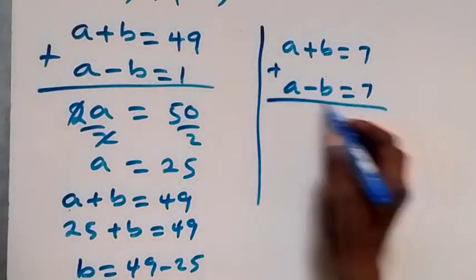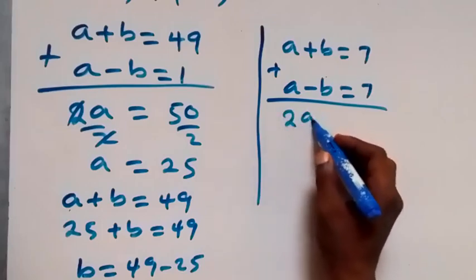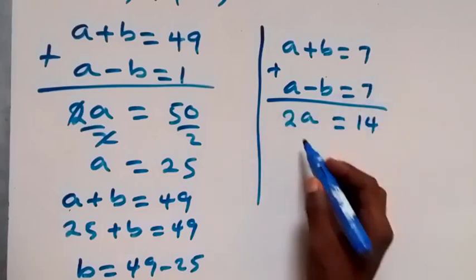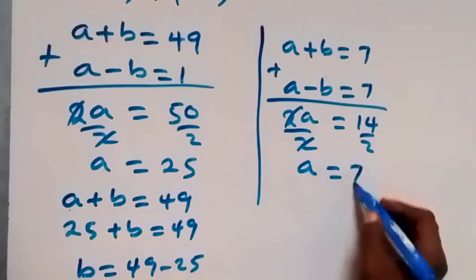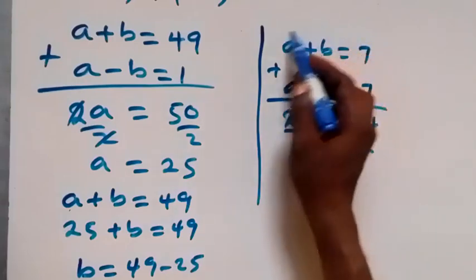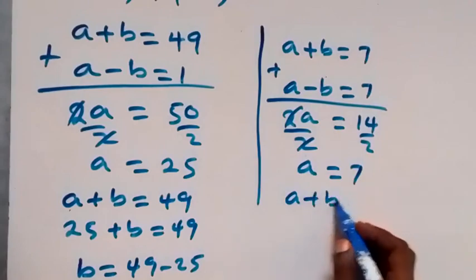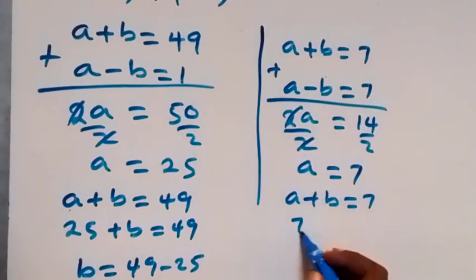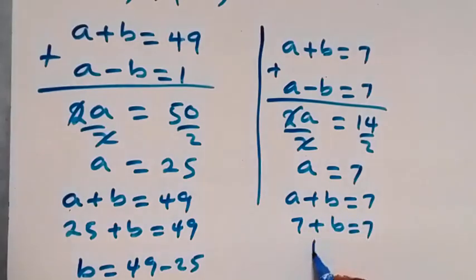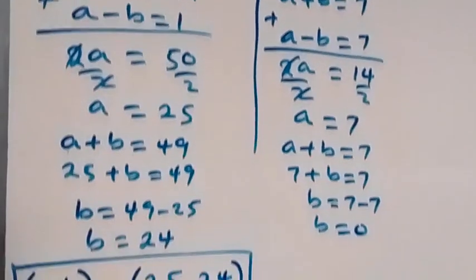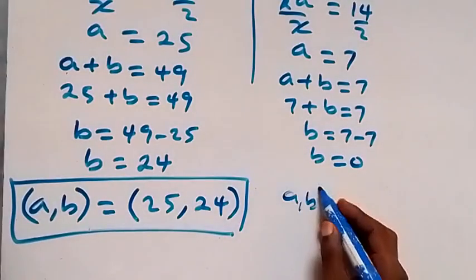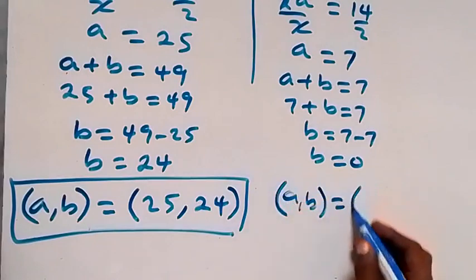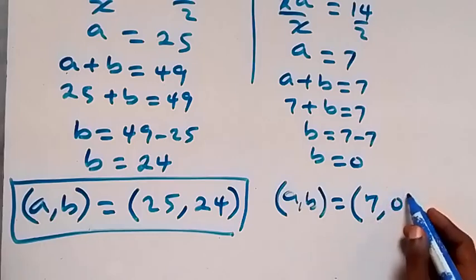For the second case, adding the two equations gives 2a = 7 + 7 = 14, so dividing both sides by 2 gives a = 7. Solving for b from the first equation: a + b = 7, so 7 + b = 7, giving b = 7 - 7 = 0. The second solution is (a, b) = (7, 0).